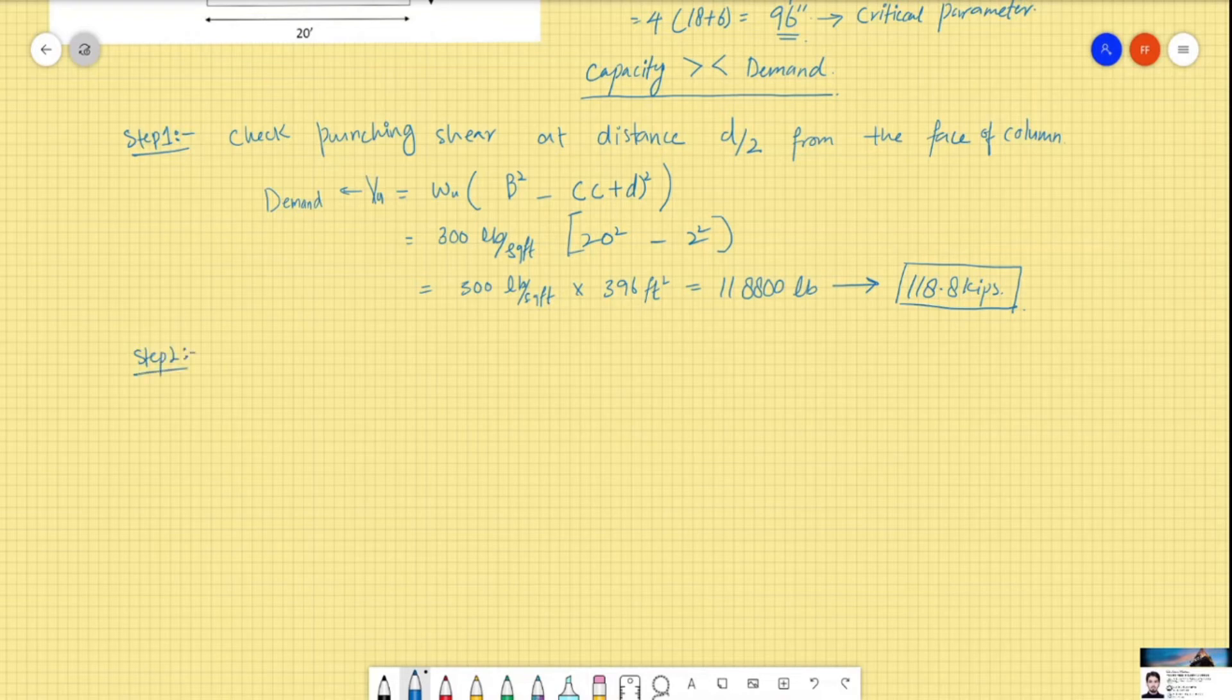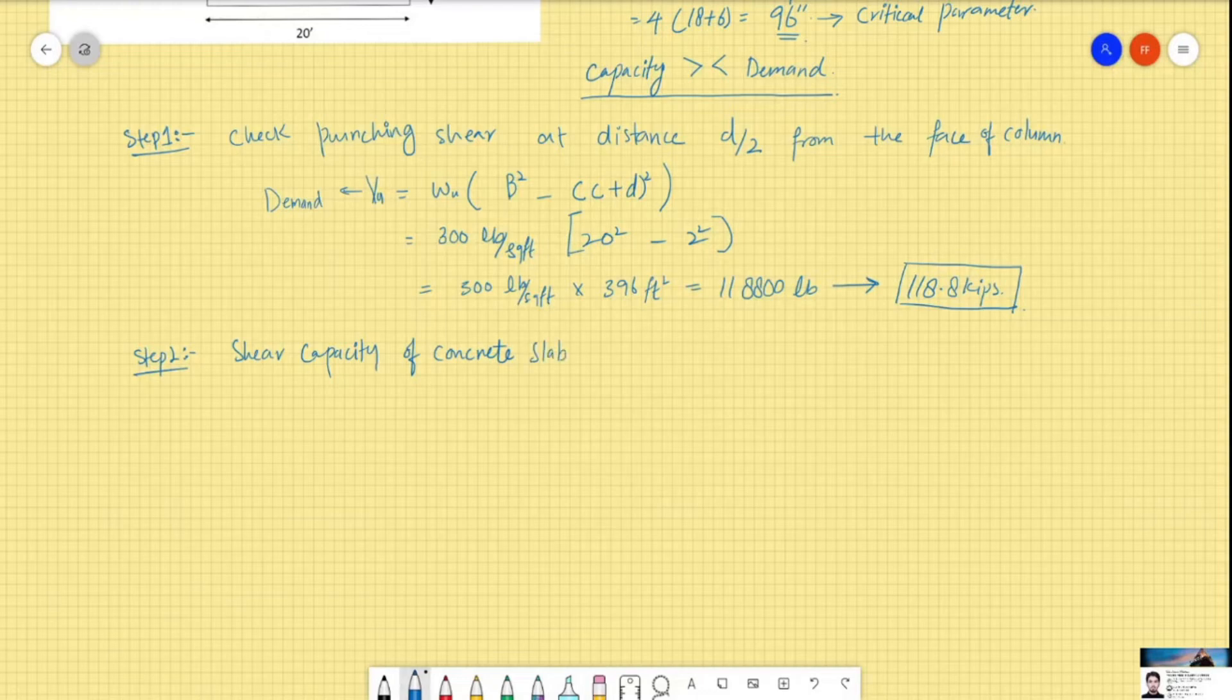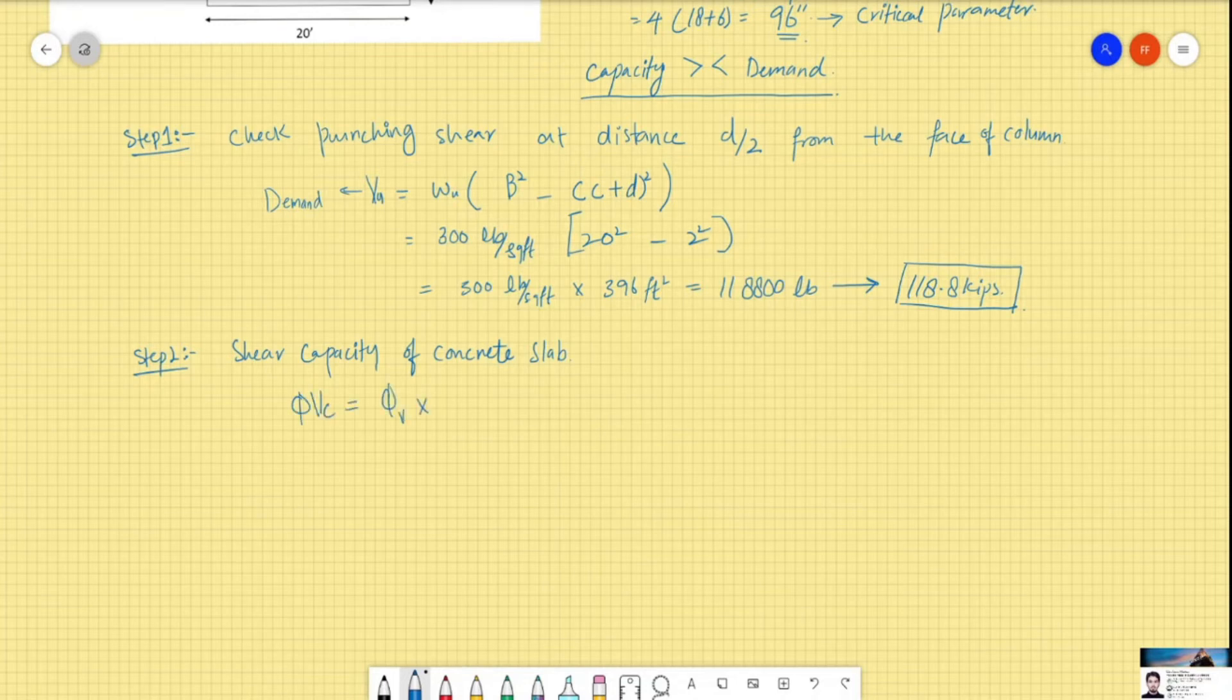Step 2: we have to check the shear capacity of the concrete slab. So in order to calculate that, we have to find phi Vc, and this is phi times 4 lambda square root fc prime b0 d.